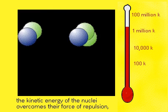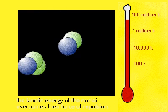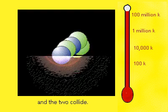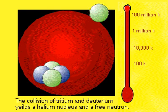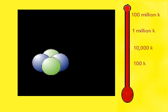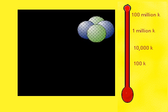the kinetic energy of the nuclei overcomes the repelling forces and the two collide. The collision of tritium and deuterium yields a helium nucleus composed of two neutrons and two protons and a free neutron. But it also releases a tremendous amount of energy in the form of heat.